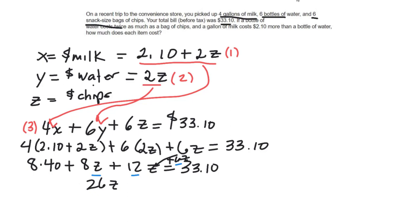And then I would take 33.10 minus 8.40, and I get 24.70. What did I do? I subtracted the 8.40 from both sides, minus 8.40. And then I take the 24.70 and I divide by 26, and I get 95, or 0.95.